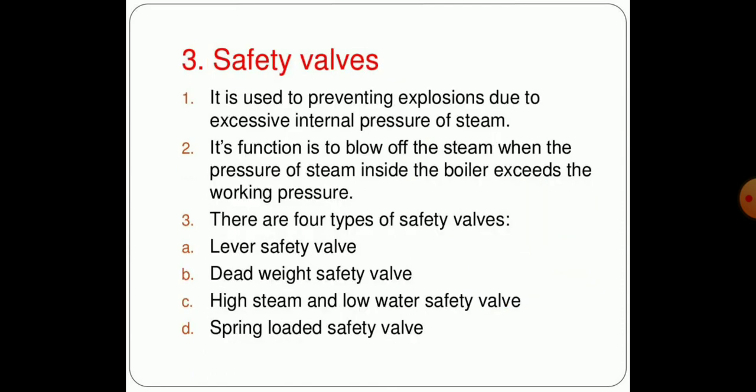The third safety and essential mounting of the boiler is the safety valve. It is used to prevent explosions due to excessive internal pressure of steam. The main function is to blow off the steam when the pressure of steam inside the boiler exceeds the working pressure. There are basically four types of safety valves.